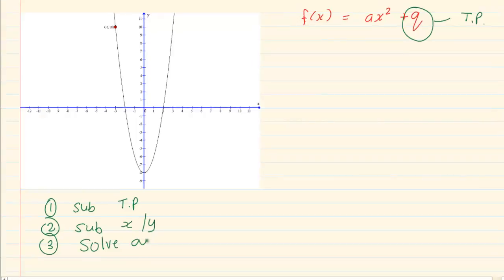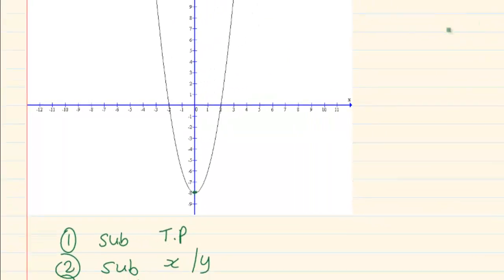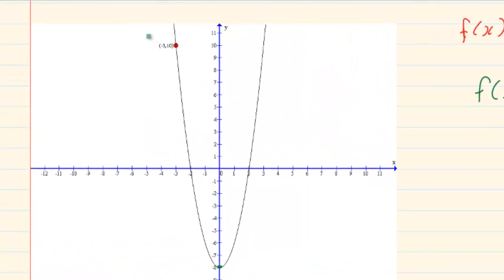Alright let us look at the following graph. Here we can see that the turning point is on minus 8. So we are going to have f of x is going to equal to ax squared minus 8. Then we are going to substitute the x and y that they have given us. So they have given us minus 3 and 10.